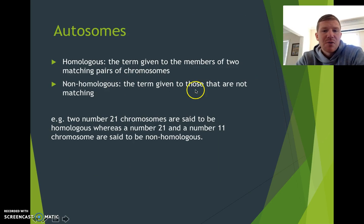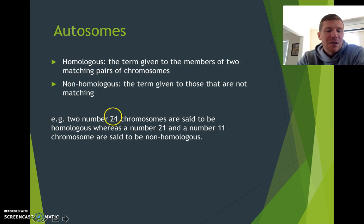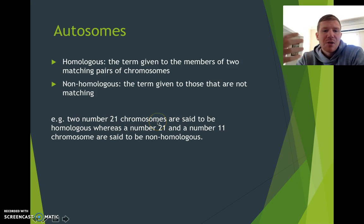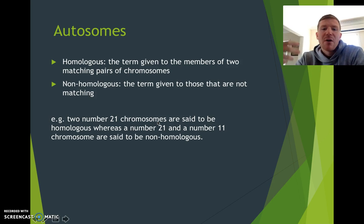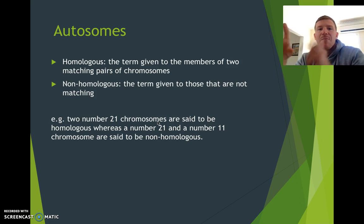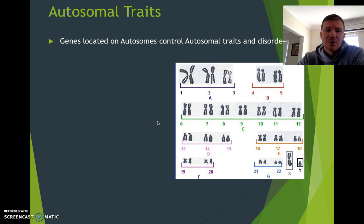Non-homologous is a term for chromosomes that are not matching. The example given is that two number 21 chromosomes are said to be homologous, whereas chromosome 21 and chromosome 11 — they're non-homologous.